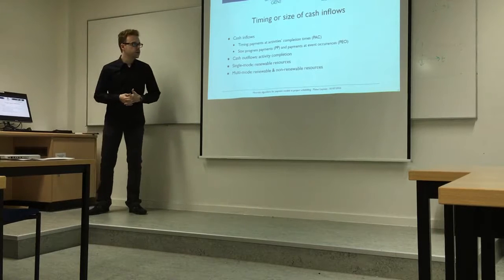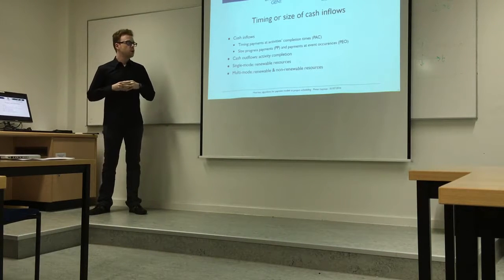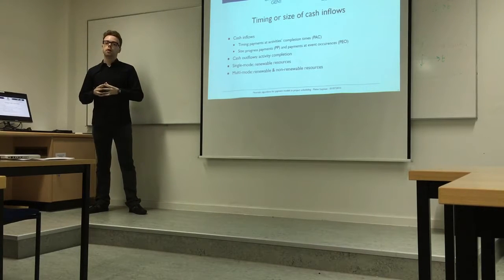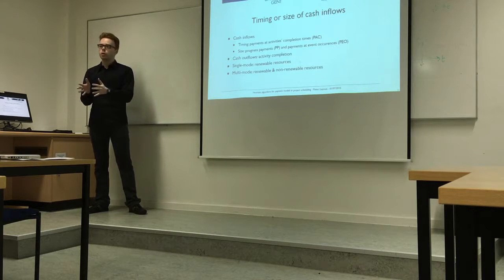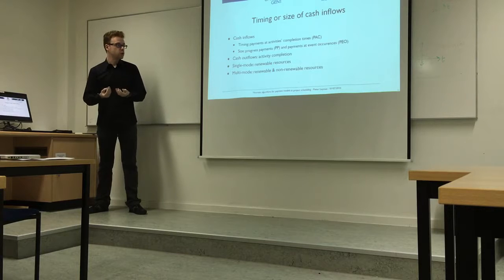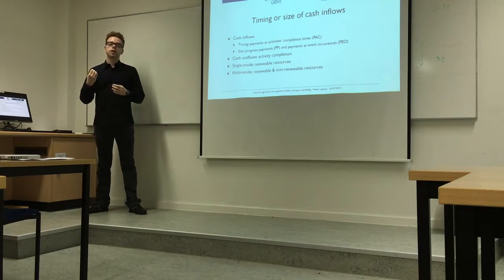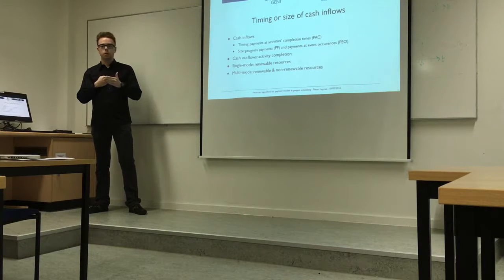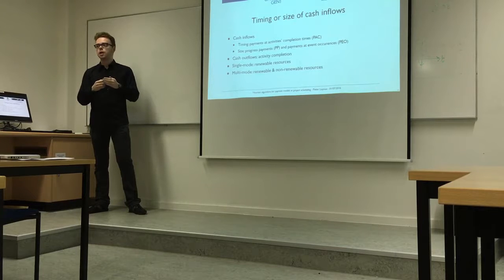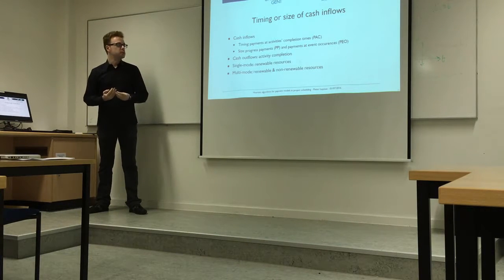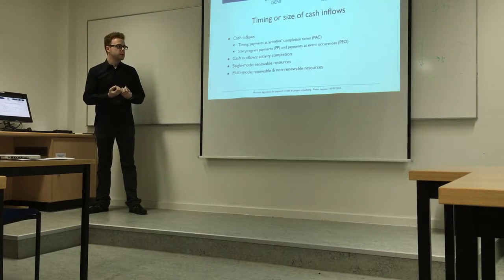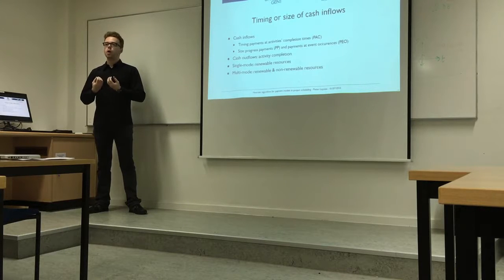So far I've been talking about the timing of cash flows. What if you also consider the size? Instead of a pre-assigned cash flow per activity, assume only cash outflows assigned to each activity — essentially only costs. The cash inflows are then determined by progress payments: for example, after 5, 10, 15 weeks you receive cash inflows based on work done since the previous payment. The question again becomes how to schedule activities to cope with this.